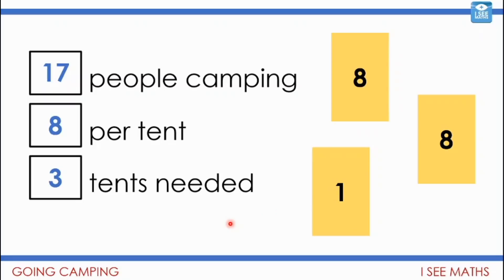If 17 people were going camping with eight per tent, I would still need three tents. If there was one person less — 16 camping — I'd only need two tents, just those two eights. But 17 people would need three tents, and I would still need three tents all the way up to 24 people. So with eight per tent and three tents needed, that's the correct number of tents for anywhere between 17 and 24 people. That understanding is going to be really key for the last questions on Task C.